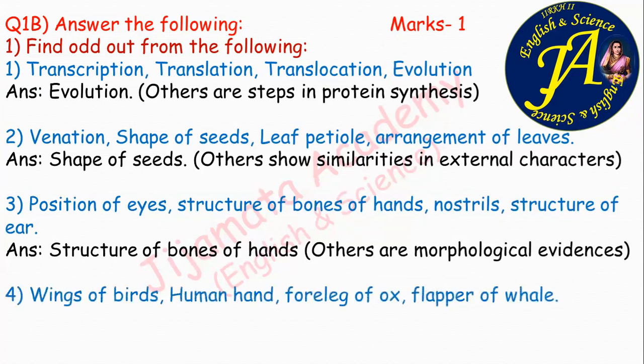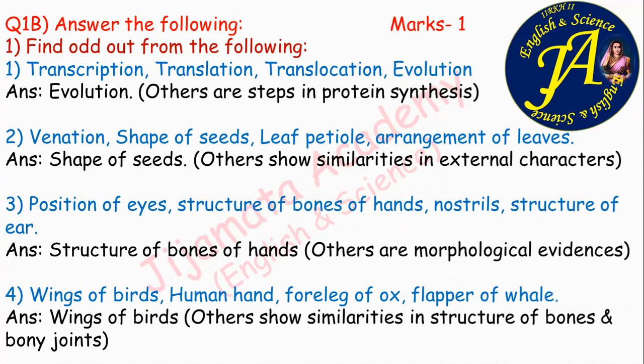The options are: wings of birds, human hand, foreleg of ox, flapper of whale. Note that instead of wings of birds, wings of insects may be asked. The correct answer is wings of birds, because human hand, foreleg of ox or cat, and flapper of whale show similarities in their internal structures like bones and bony joints — these are anatomical evidences. Wings of birds do not show any such similarity. Therefore, wings of birds are the odd one.